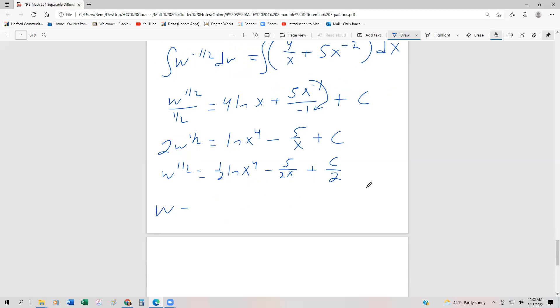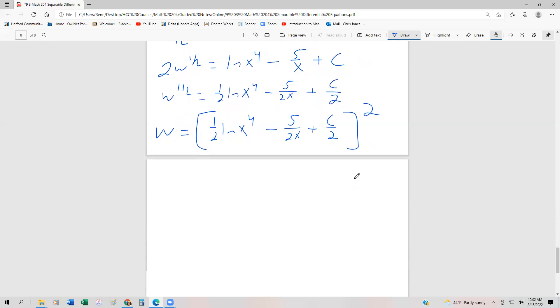So a couple ways we can write this answer. One is we could say [one half ln(x⁴) minus 5 over 2x plus c over 2] squared. Another thing we could do is operate on this ln(x⁴) for one half, because that would become ln(x⁴) times one half, or ln(x²), if we were to simplify.